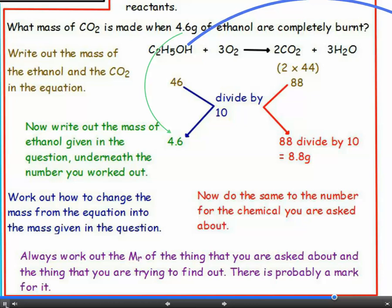These are the hardest calculations in the C2 unit. And if you're finding them difficult, then don't panic. Work out the MR values of the thing you're told about, and the thing you're asked about. This will almost always get you one mark out of three, and might even sneak you a second mark.